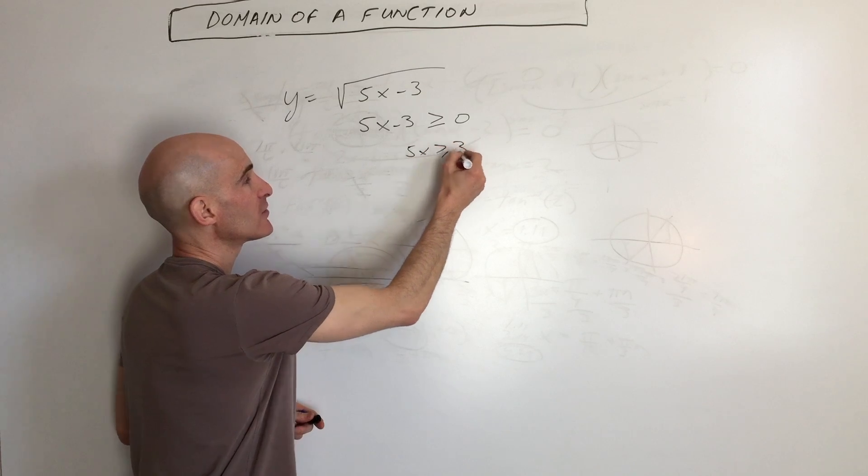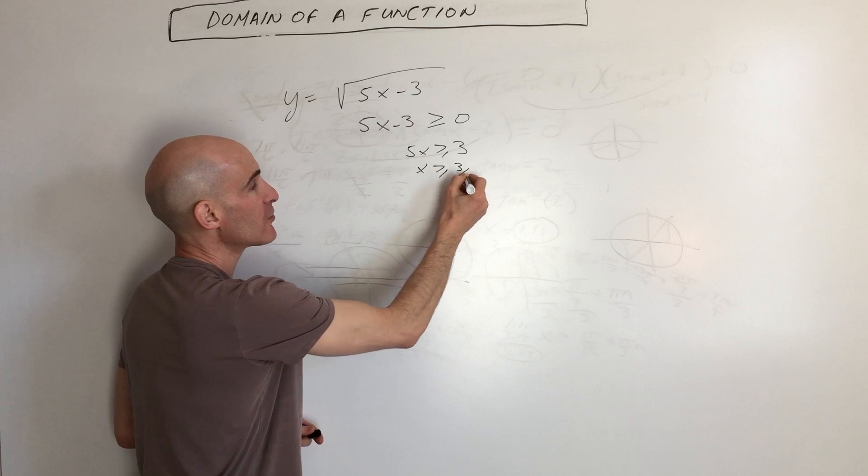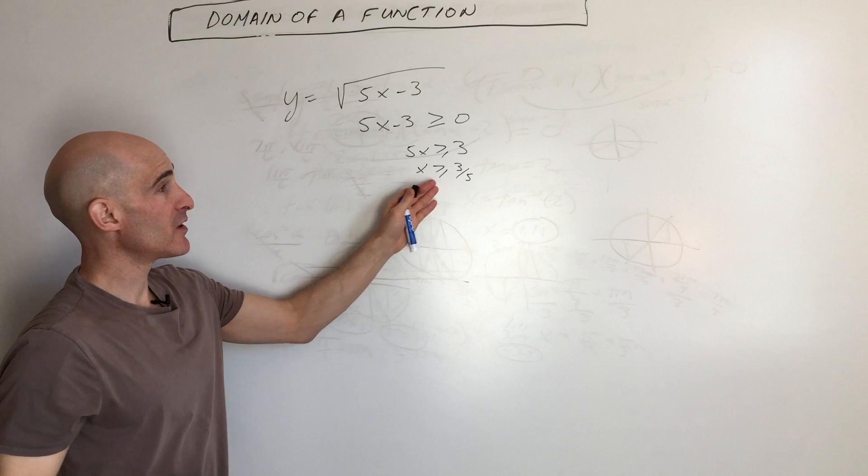5x is greater than or equal to 3, divide by 5. So x has to be greater than or equal to 3 fifths. That's one way to write it.